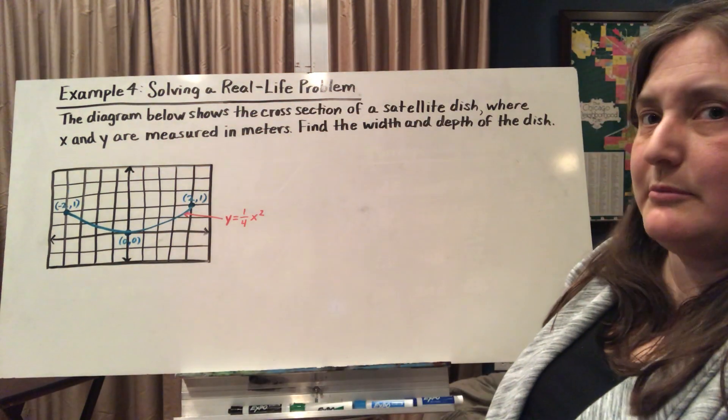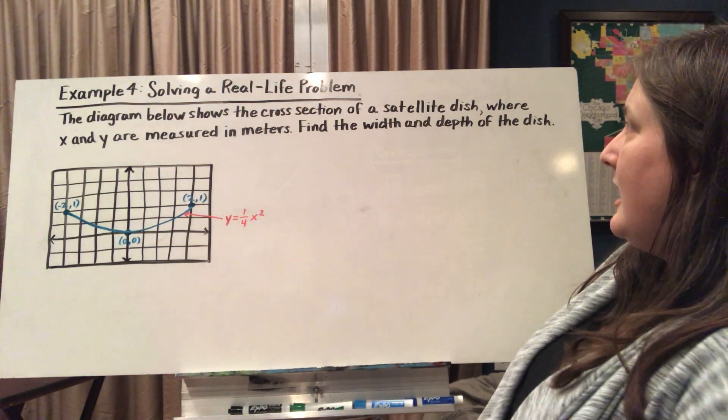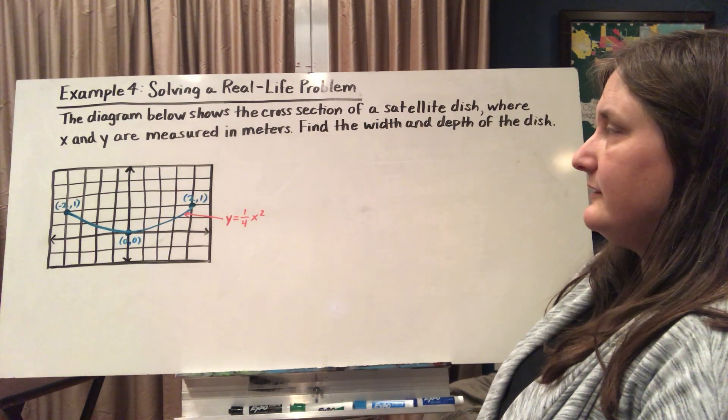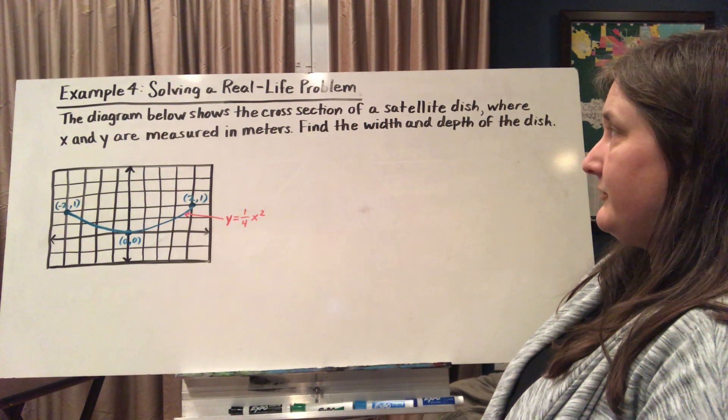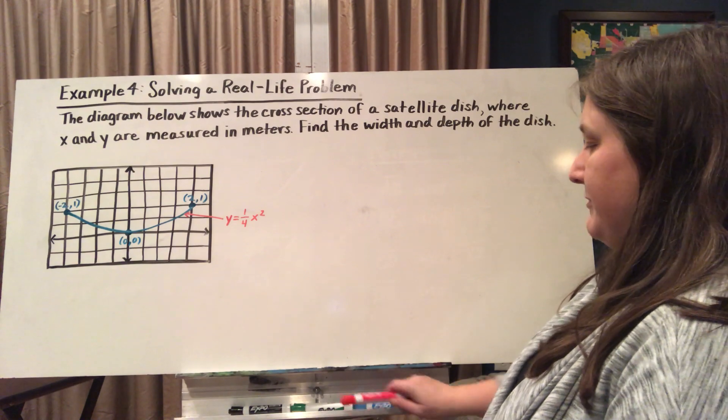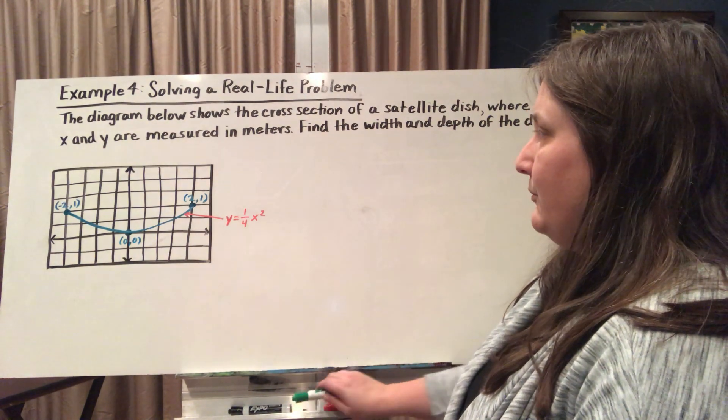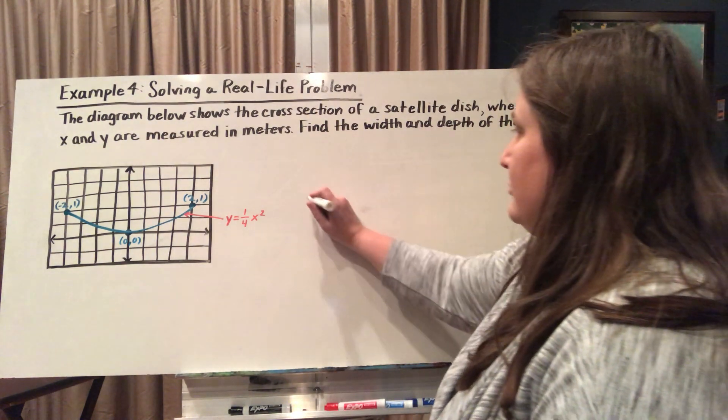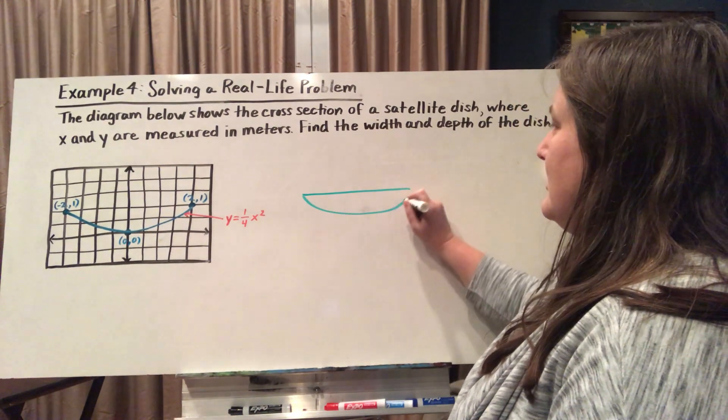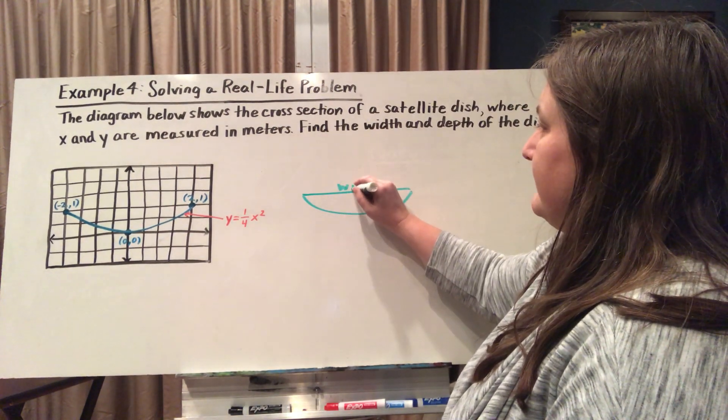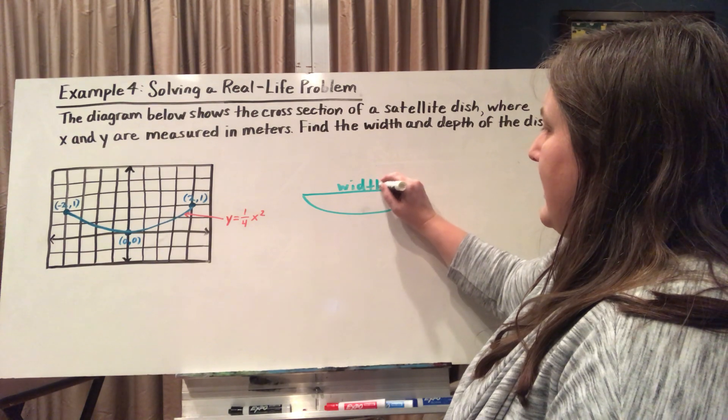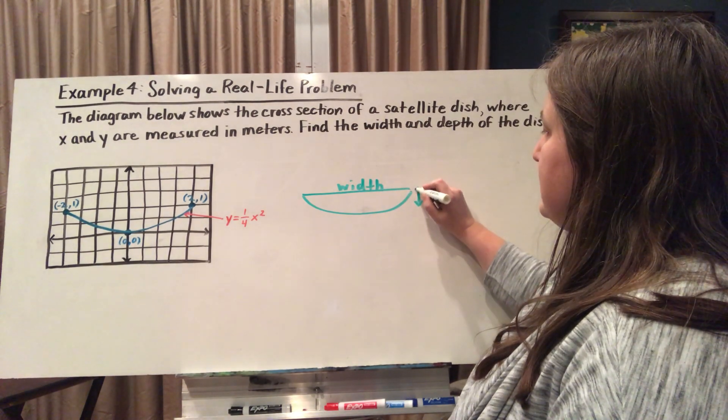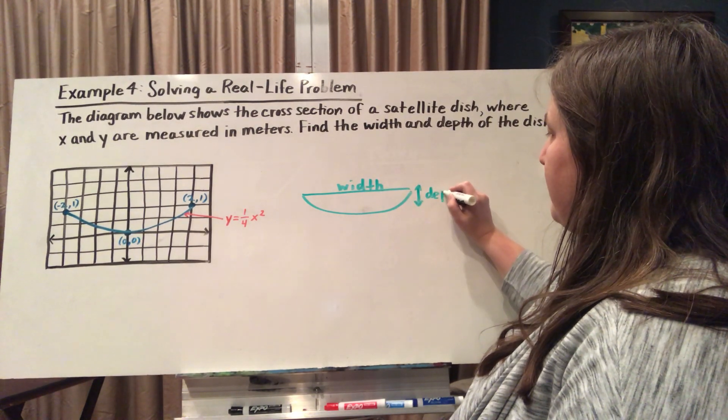This diagram shows the cross-section of a satellite dish where x and y are measured in meters. Find the width and the depth of the dish. Well, when I'm looking at a satellite dish here, when I'm talking about the width, I'm talking about this length right here. And the depth would be how deep it is. So here is my depth.